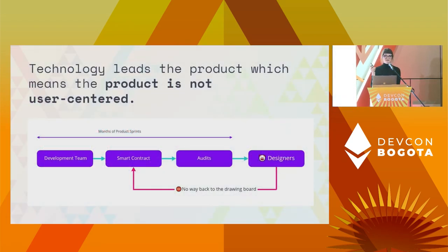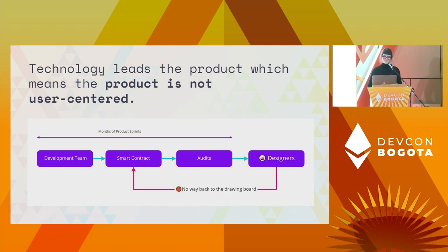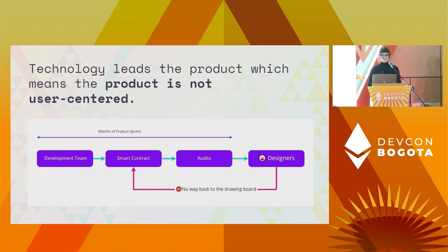So what is the current UX situation in web3? The products are extremely complex and difficult, and development teams are more focused on solving problems localized at the smart contract level. There are many levels in between the smart contract and the user. What's happening is: the development team meets, decides how the protocol or dApp will work, they write the smart contract, and afterwards send it to audit — usually two to four audits on average. After the code has been audited and fixed, the development team decides to bring design to the table.